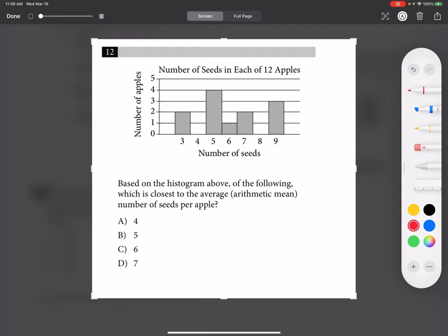I need to find the areas of each histogram. For example, three times two is six, five times four is twenty, six times one is six, seven times two is fourteen.